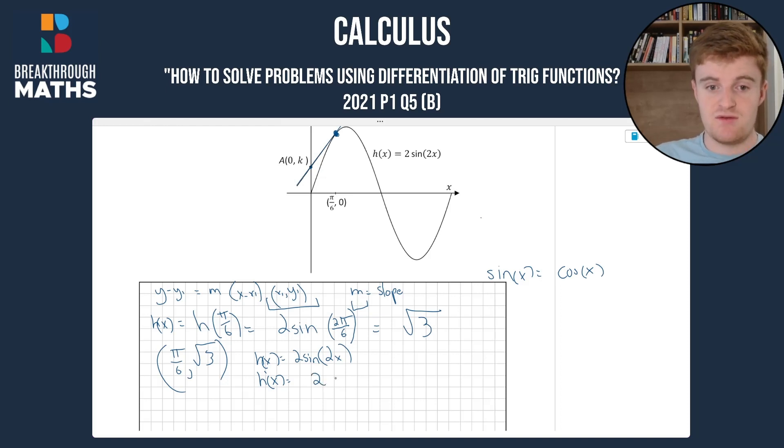So the first bit of this differentiation will be 2cos(2x). And that's going to be multiplied by, now we need to differentiate what's inside the bracket. So we differentiated what's outside the bracket and now we need to differentiate what's inside the bracket. So the derivative of 2x will just be 2. So h'(x) is going to be 2 × 2cos(2x), which will be 4cos(2x).